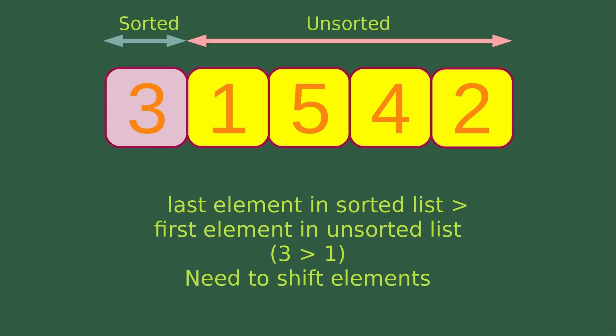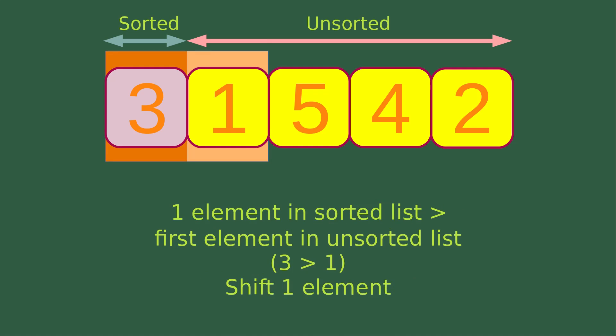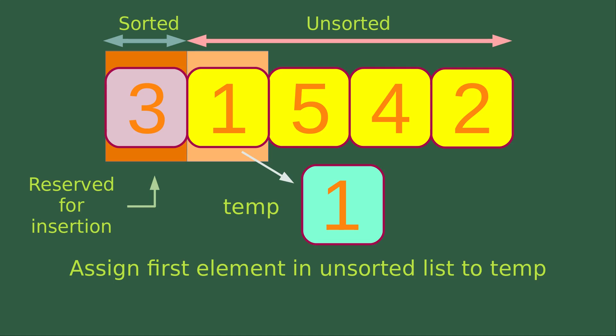We can see that 3 is larger than 1 according to our diagram. In this situation, we need to shift the elements so that sorting can be achieved. We can see that there is one element in the sorted list that is larger than the first element in the unsorted list — it is 3, which is larger than 1. So in this case, I need to shift one element. Now we first copy the element, which is the first element in the unsorted list, to a variable called temp.